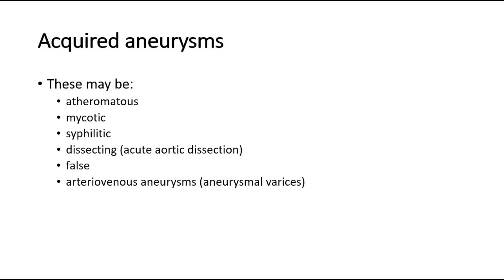Next are acquired aneurysms, which can be atheromatous, mycotic, syphilitic, dissecting, false, or arteriovenous aneurysms.